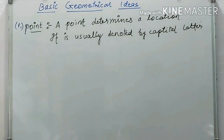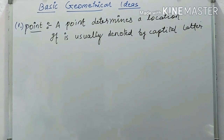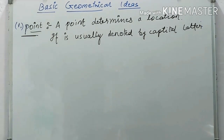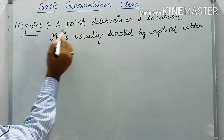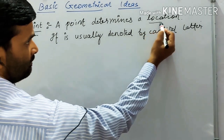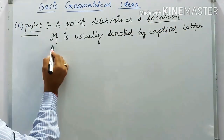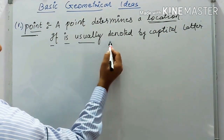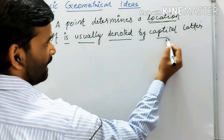Good morning students. Today we will start a new chapter: Basic Geometrical Ideas. The first topic is a point. A point is used to determine or mark a location. It is usually denoted by a capital letter.